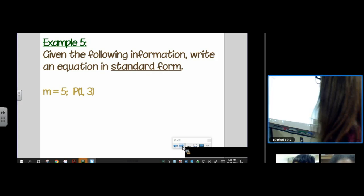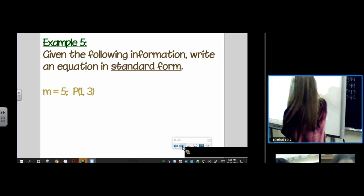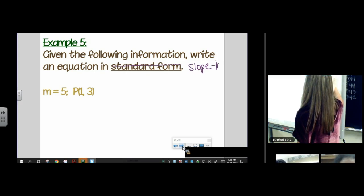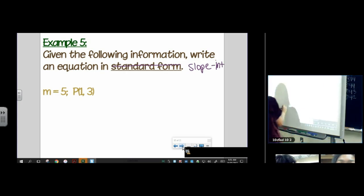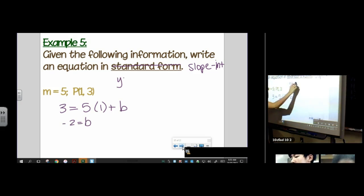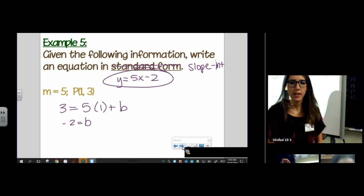Alrighty, given the following information, write an equation in standard form. If I see that on my homework, I'm going to cross it out because I know it means write it in slope-intercept form. y equals mx plus b. Five equals three plus b. Subtract 5 from both sides. b equals negative 2. y equals 5x minus 2. Easy.